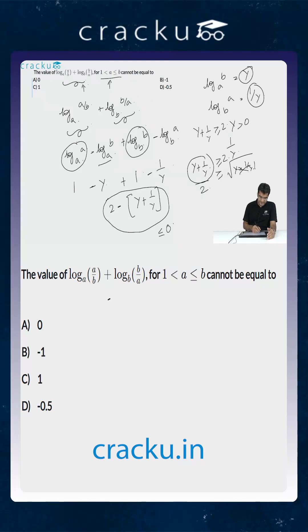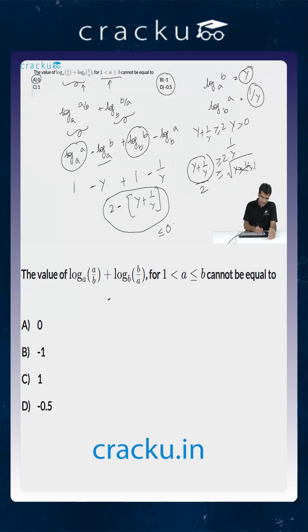Looking at the options: option A is possible because the expression can equal 0, and options B and D are negative values which are also possible. The only value which is not possible is option C, which is a positive number.